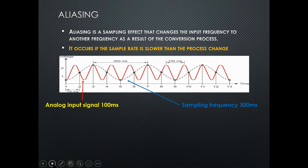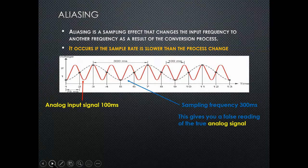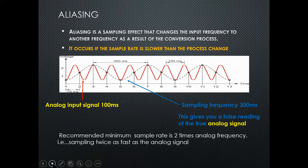If the sample rate is slower than the process change, you get a lot of error — a false reading of the true analog signal. If your analog signal is at 100 milliseconds and you're scanning at 300 milliseconds, that gives a false reading. The recommended minimum sample rate is two times the analog frequency. If the analog frequency is 150 ms, you need to sample at least every 75 ms.